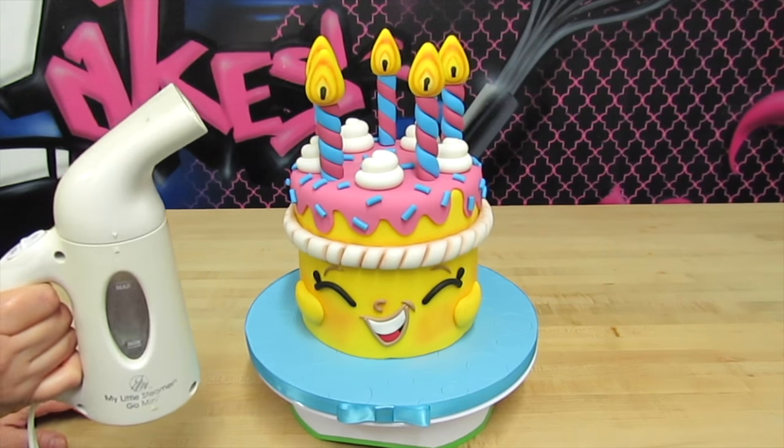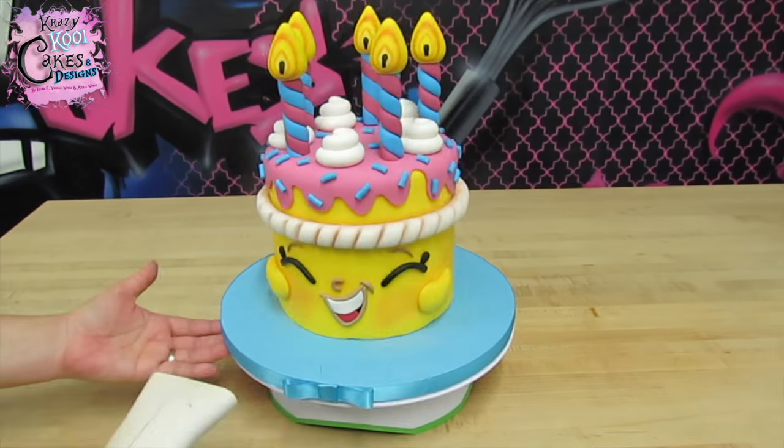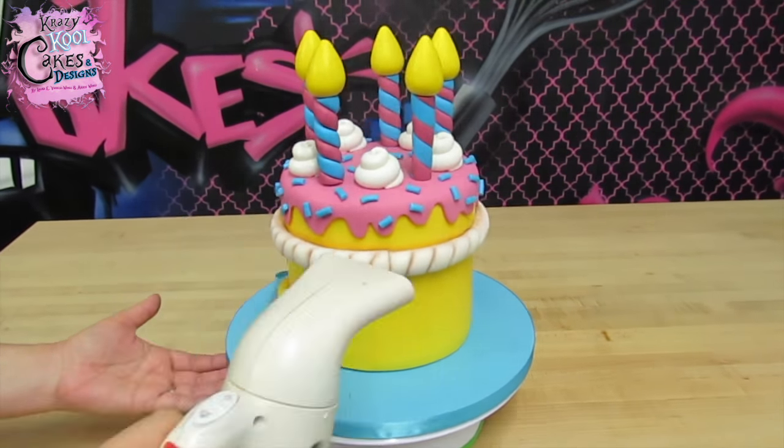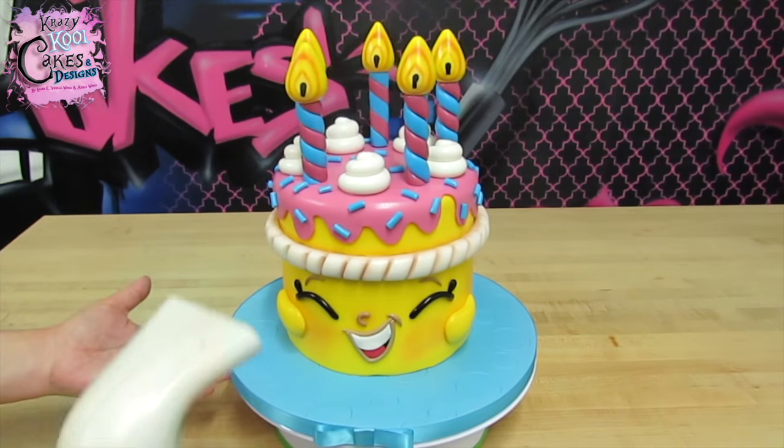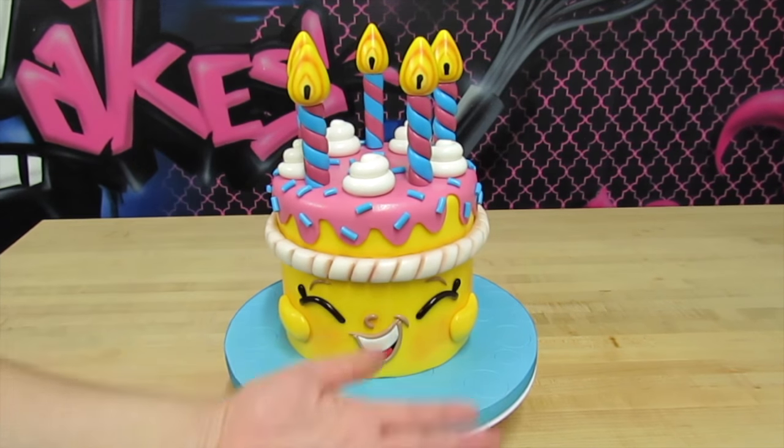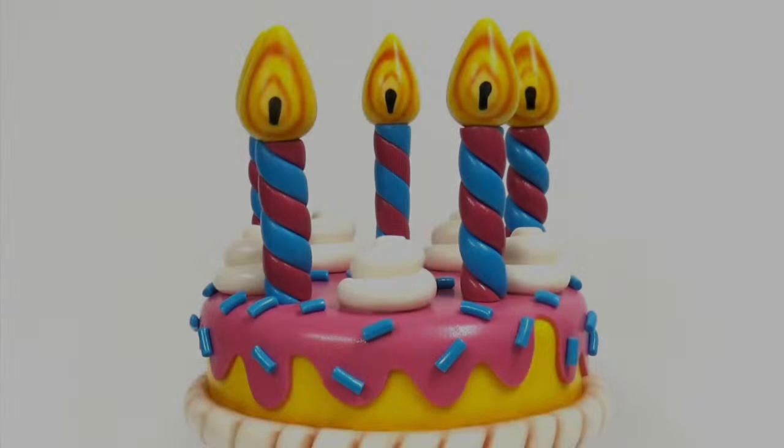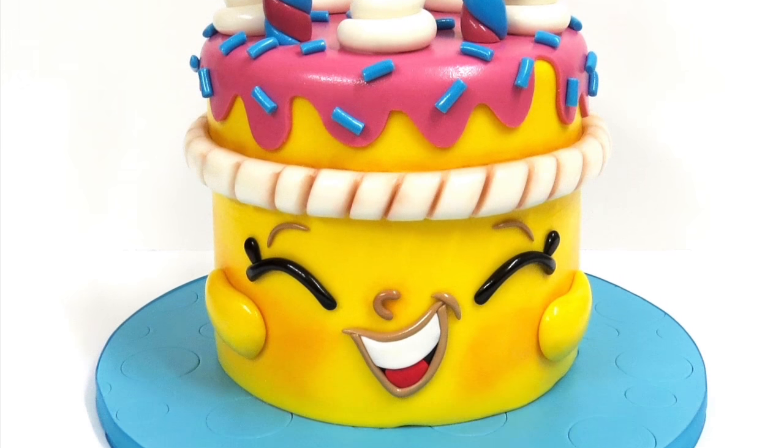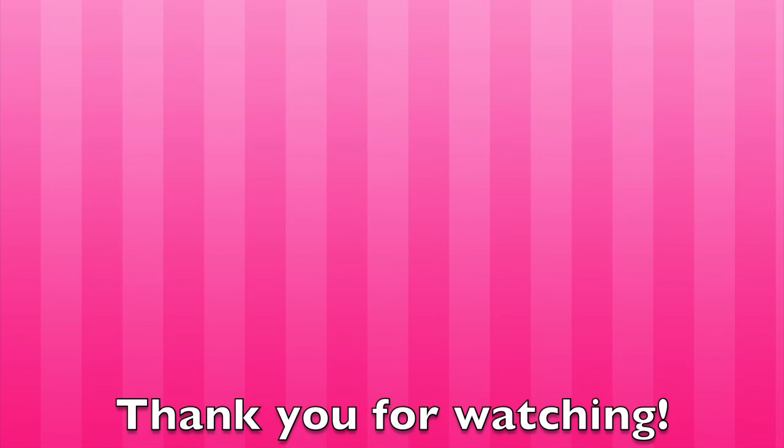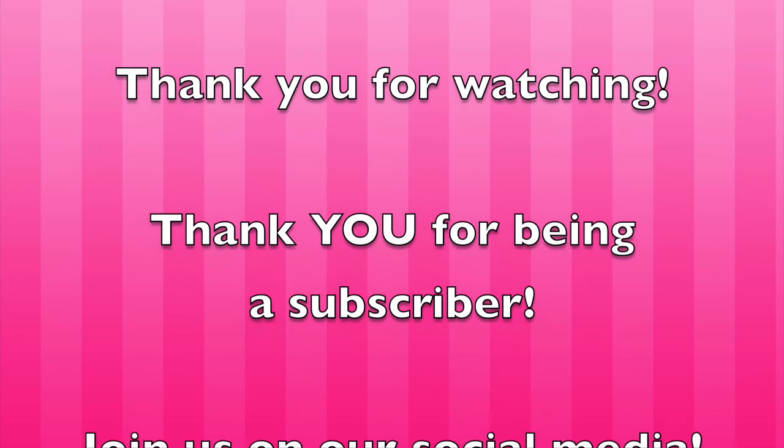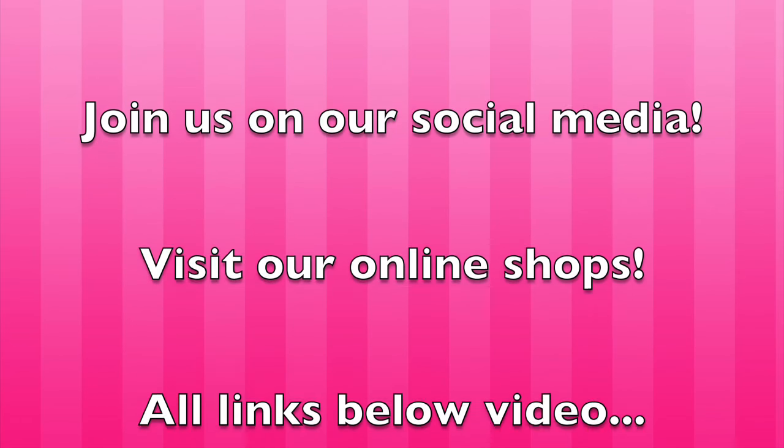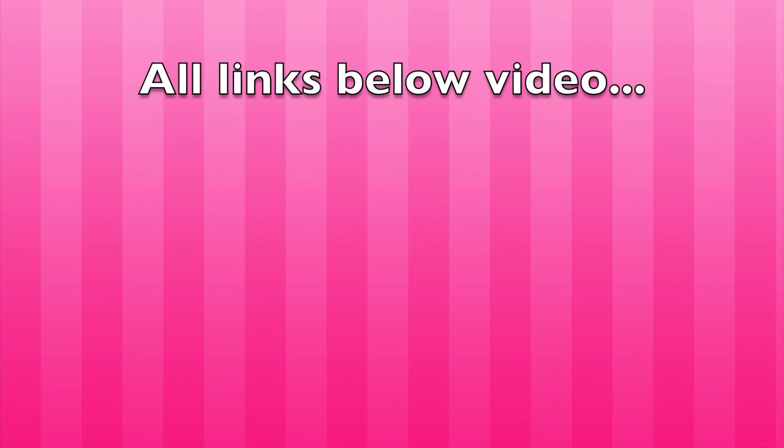We are done. Now all we need to do is give her a beautiful shine to clean her up. We're using our favorite little steamer. Look how beautiful she looks. You couldn't wish for a more beautiful cake. We hope you enjoyed this tutorial, everybody. Thanks for watching and don't forget to subscribe. We'll see you all later. Bye.